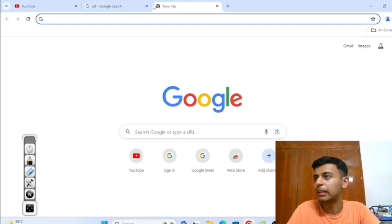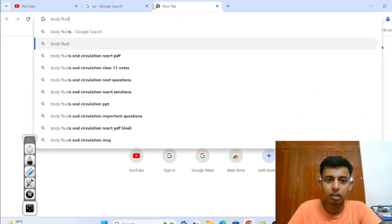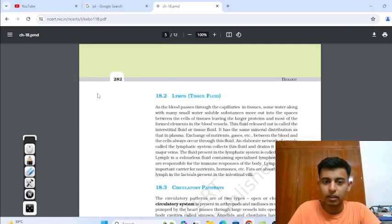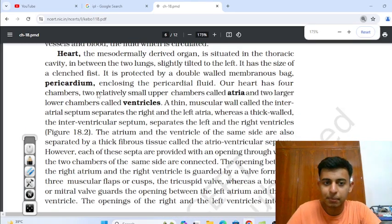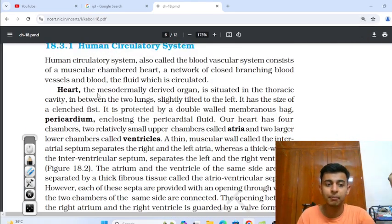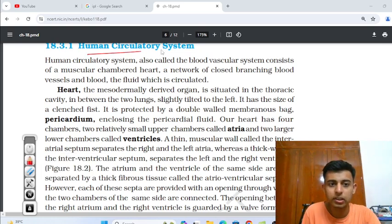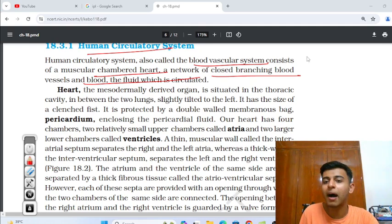Which chapter should we take? Let me take a certain chapter. Let's say body fluids and circulation I'm taking. Okay, let's see. You're reading about the heart. How to read NCERT, I'm telling you very clearly. Number one thing, when you've started reading your NCERT, first part, human circulatory system. What just happened? Human circulatory system, it's about the heart basically. Human circulatory system, also called the blood vascular system, consists of a muscular chambered heart, network of closed blood vessels, and blood fluid which is circulated.